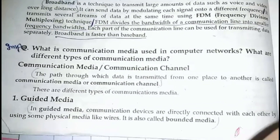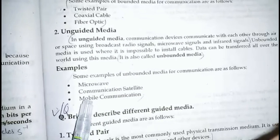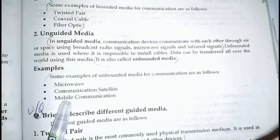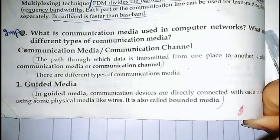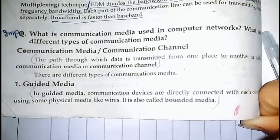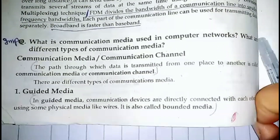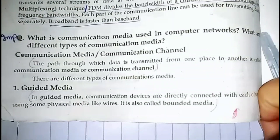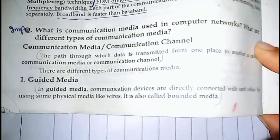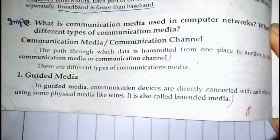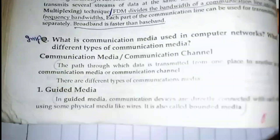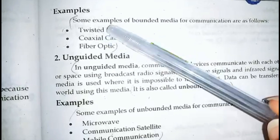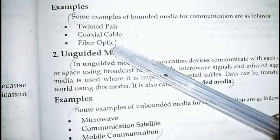In the next lecture, we will cover communication media. There are two types of communication media: guided media and unguided media. Guided media is the one that uses wires — devices are directly connected using physical media such as wires. Guided media is also called bounded media. Guided media has three types: twisted pair wire, coaxial cables, and fiber optics.